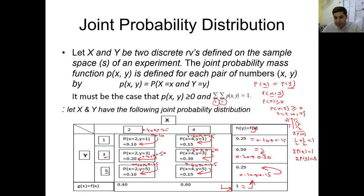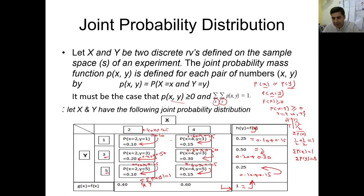These are the joint probabilities. We can show that the double summation over x and y of p(x, y) equals 1: 0.10+0.15+0.20+0.30+0.10+0.15 = 1. We have proven this property. All joint probabilities are greater than or equal to 0 — for example, the joint probability when x=2 and y=1 is 0.10, and when x=4 and y=1 it is 0.15. When we sum all these probabilities using the double summation, where one summation is over x and the other over y, the result equals 1.